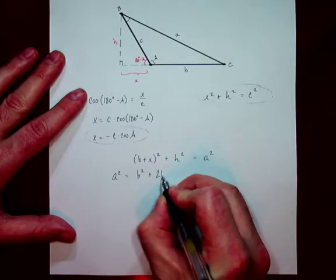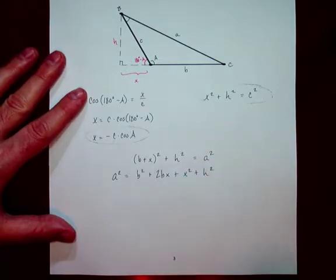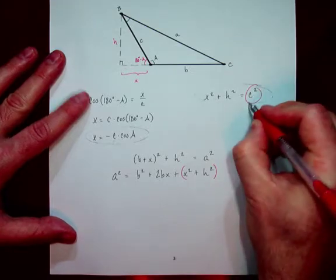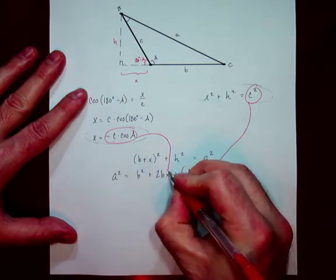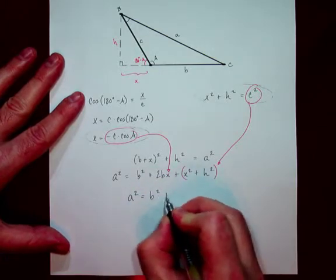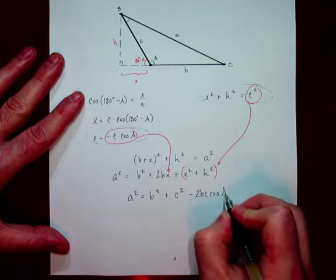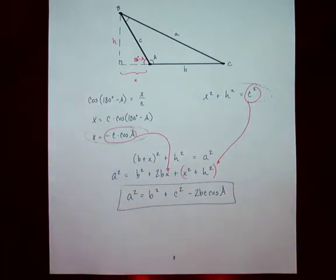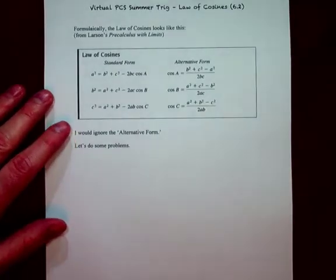Let's go ahead and put the A squared over here on the left-hand side. And I'm going to get B squared plus 2BX plus X squared plus H squared. Now, again, this right here comes in for this. This right here comes in for this X. And after just a little bit of reordering, you still get B squared plus C squared minus 2BC cosine of A. And that is identical to what it was on the previous sheet. And what we get is if we were to turn the triangle and do the same thing with the base of A and then with the base of C, we would wind up getting all three of these.